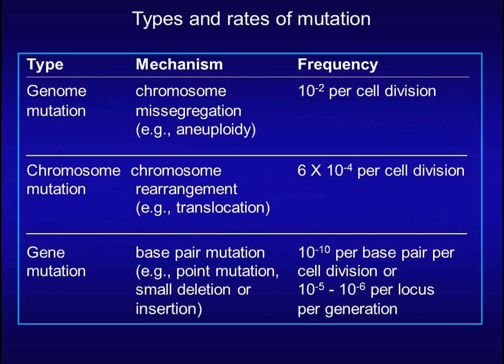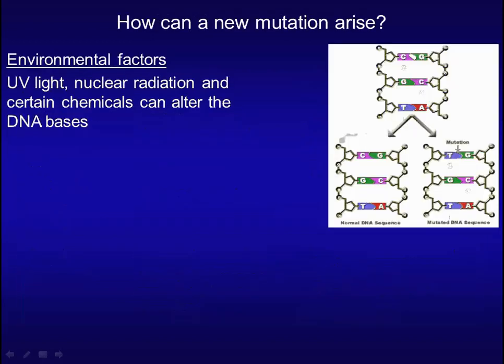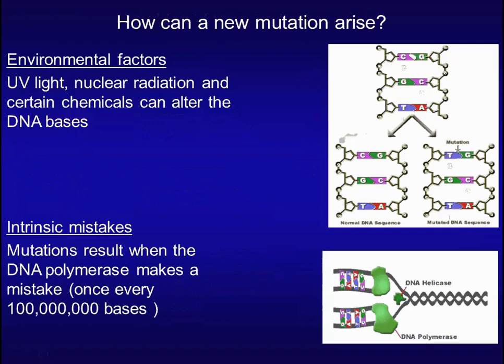Here are three types of mutations and their frequencies. The most frequent mutation is genome mutation, followed by chromosome mutation and gene mutation. A new mutation can be caused by environmental factors such as UV light, nuclear radiation, and certain chemicals. Mutations can also be caused by intrinsic mistakes made by DNA polymerase.